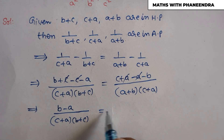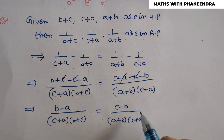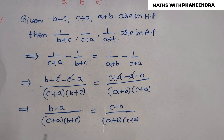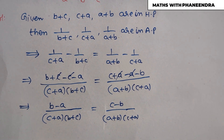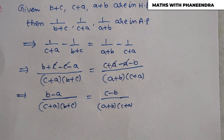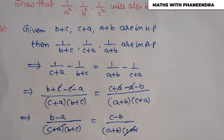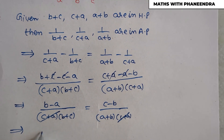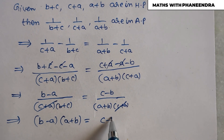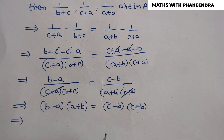Simplifying further: (b−a) divided by (b+c) equals (c−b) divided by (a+b), since (c+a) cancels from both sides. Cross-multiplying gives (b−a)(a+b) = (c−b)(c+a), which is also written as (b−a)(b+a) = (c−b)(b+c).